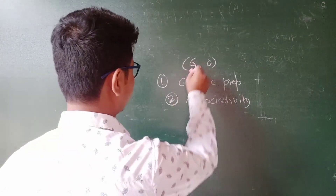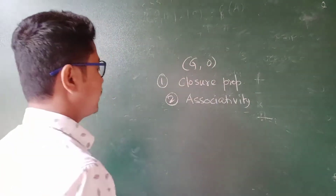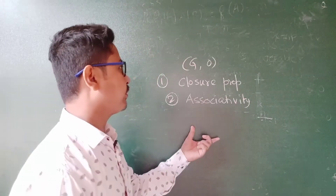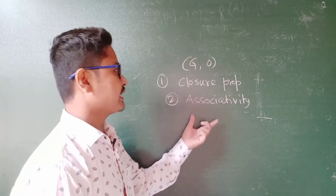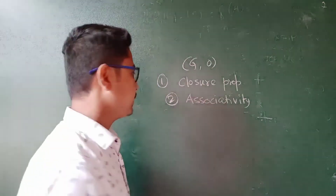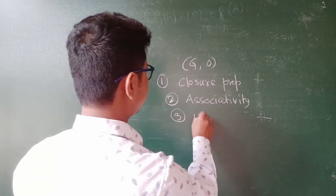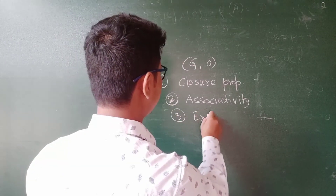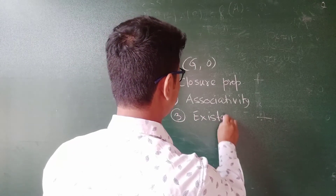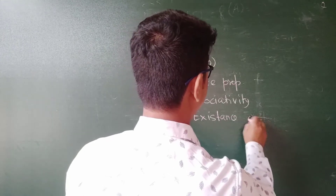Group elements. Associativity — the property must be satisfied here with respect to the given binary operation. Existence of identity. Existence of identity — that means for all A belonging to Z.